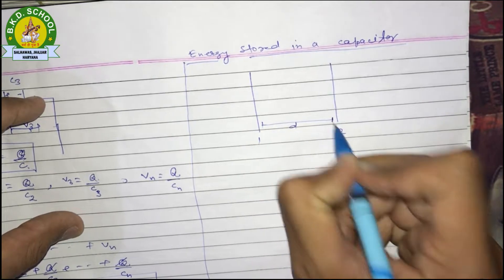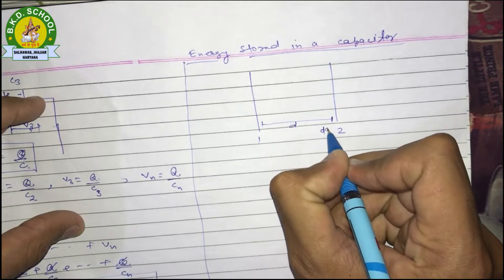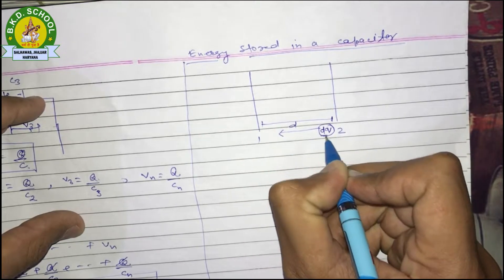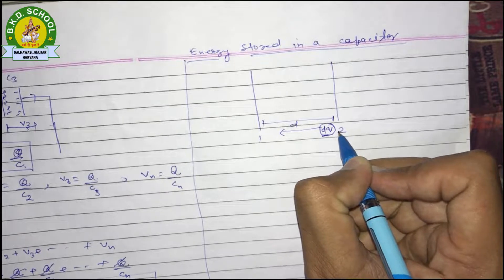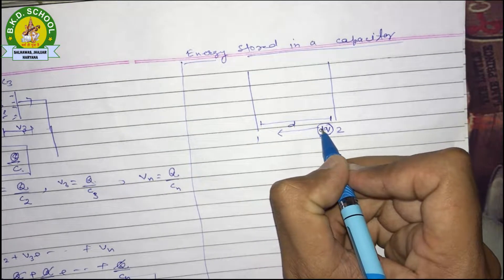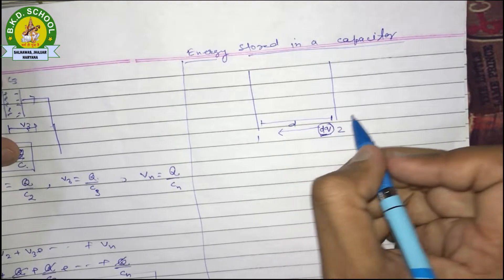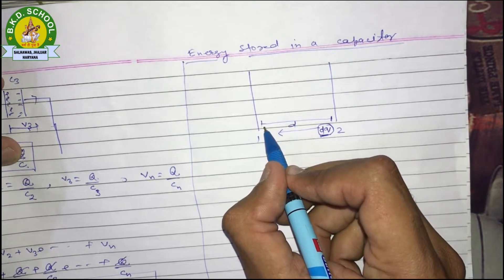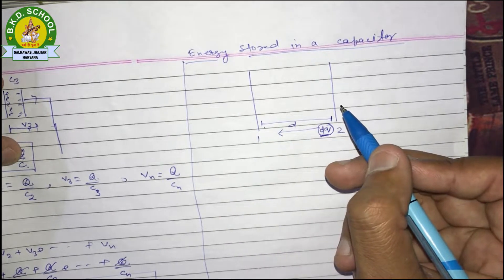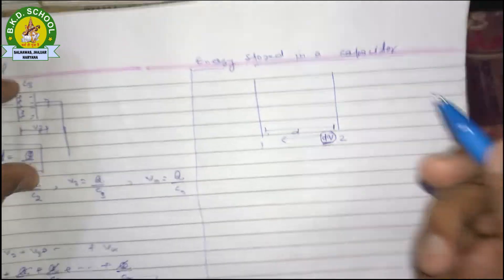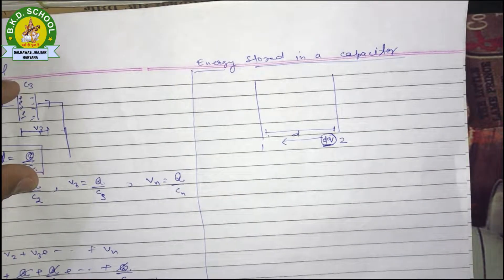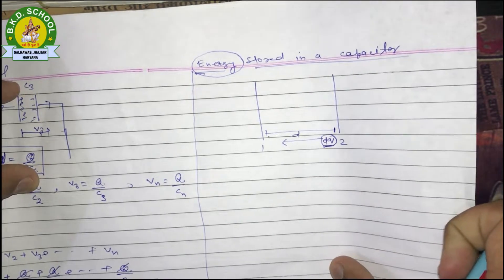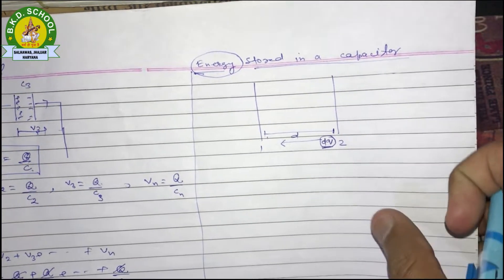Let a small amount of charge — a small installment named DQ — be transferred to plate one from plate two. To transfer this charge from plate 2 to plate 1, we need to do some work. The magnitude of that work is what we need to find, and that work done will equal the energy stored in the capacitor.